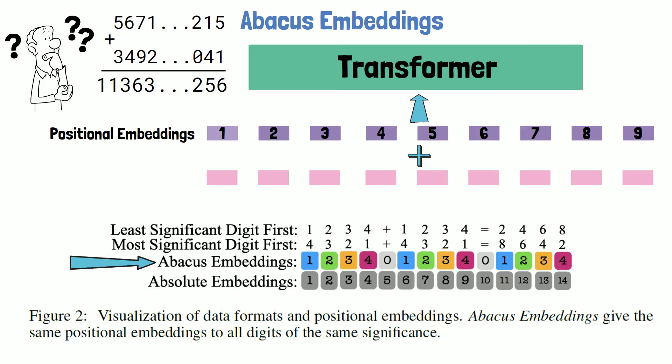We see that the first digit is assigned the number 1, but in training we can start with a larger number as well, to be ready for numbers with a large number of digits.